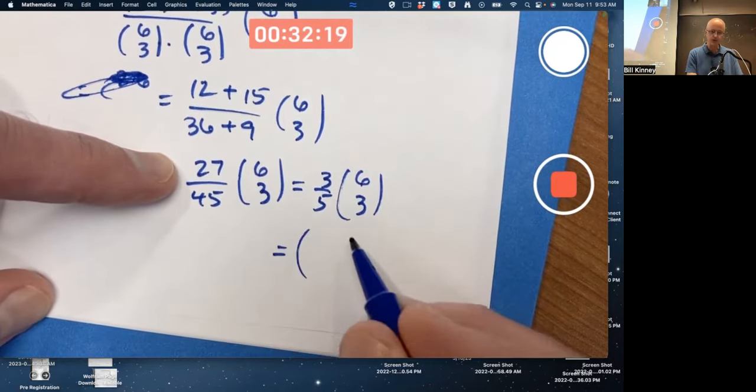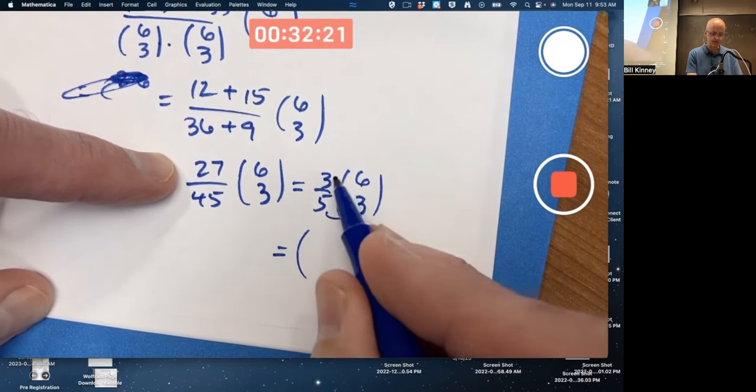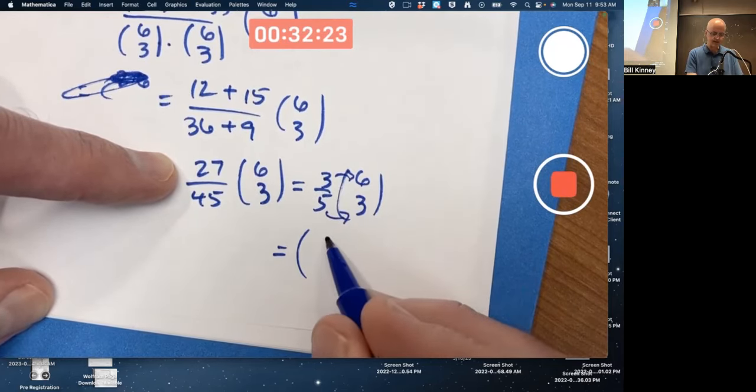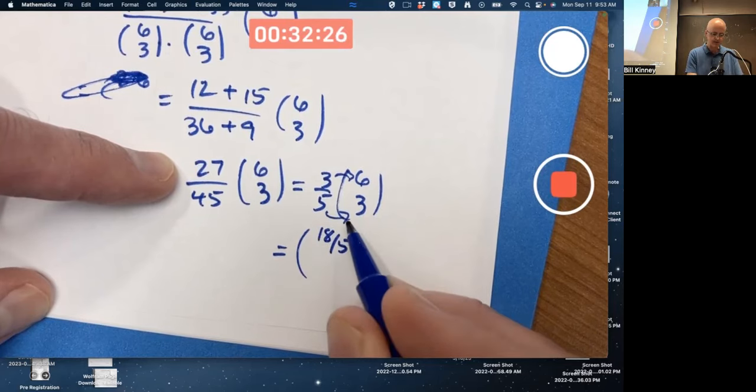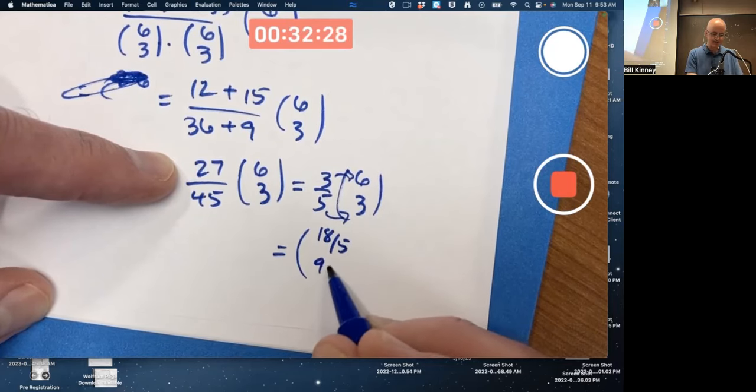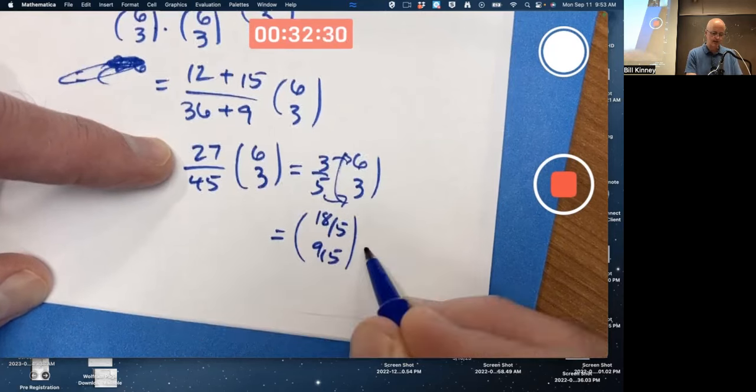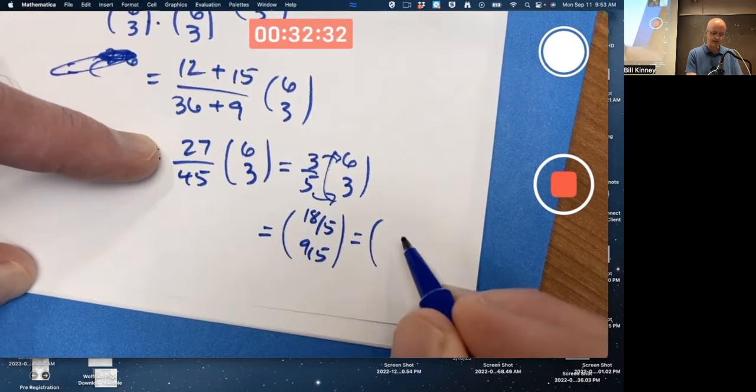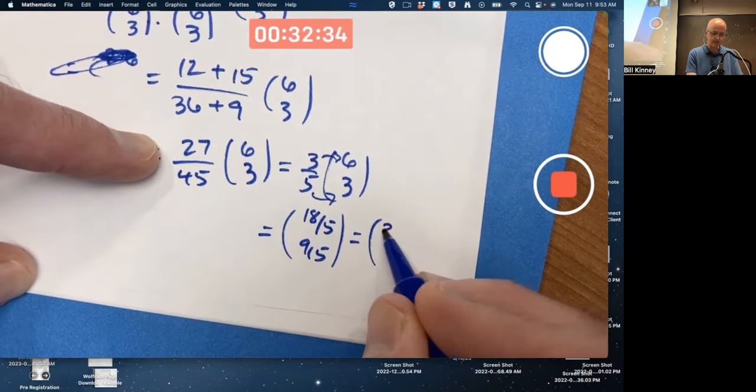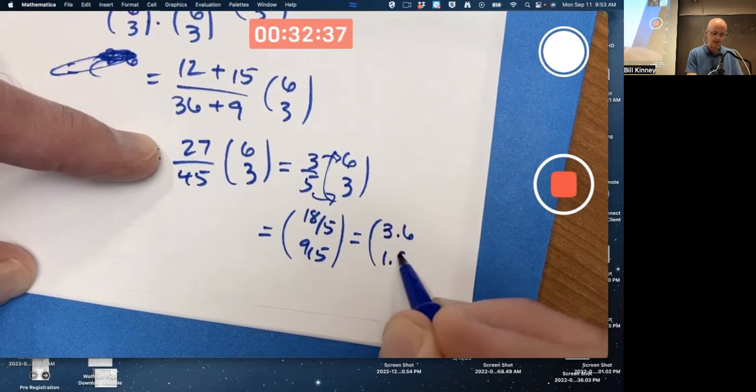But you also typically multiply the scalar back through the vector. 6 times 3 fifths is 18 fifths. 3 times 3 fifths is 9 fifths. You want to write that as a decimal, it's fine. This would be then 3.6, 1.8.